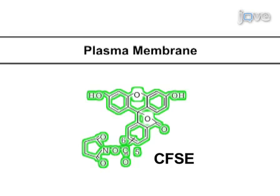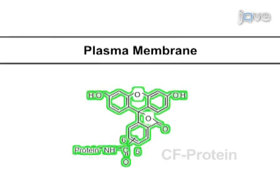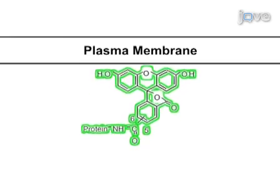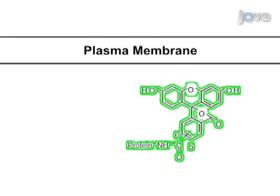The amino-reactive succinamidyl sidechain of CFSE then covalently couples the dye to intracellular proteins, thus making the cells almost permanently fluorescent.